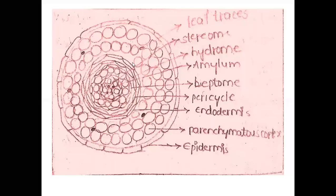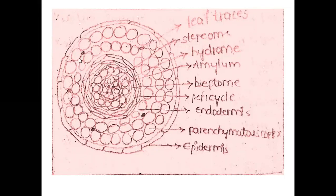Polytrichum shoot TS mainly shows spiroidal outline. The spiroidal outline polytrichum shoot TS shows mainly three major portions: one is epidermis, second one is parenchymatous cortex, and third one is stele.